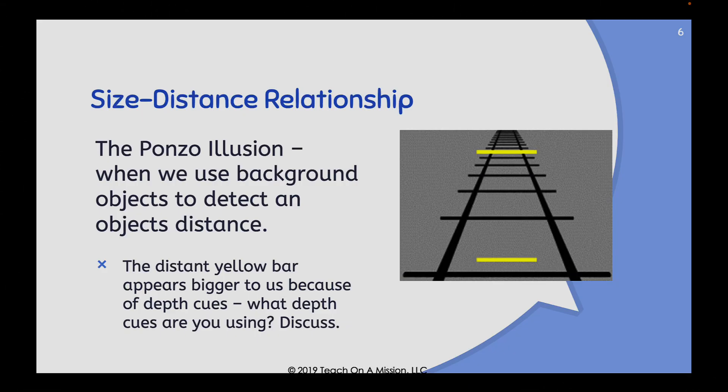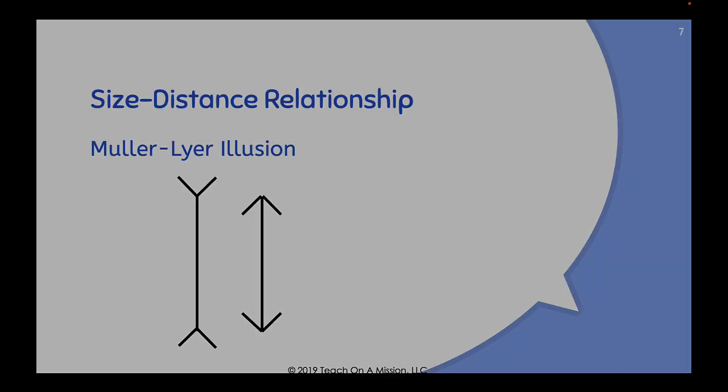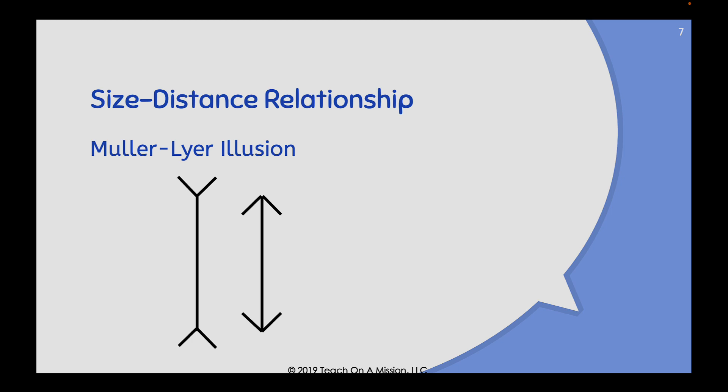Next up we have the size-distance relationship with the Ponzo illusion. When we use background objects to detect an object in the distance, the distant yellow bar appears bigger to us because of our depth cues. The Mueller-Lyer illusion demonstrates that both lines are the exact same length. Even though the arrows are pointing inward or outward, it makes it appear as though the line on the left is longer, even though they're the same exact size.